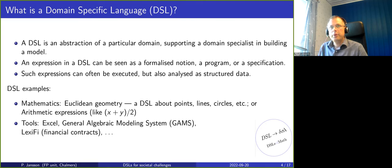DSL examples include from the mathematical side Euclidean geometry, a language about points, lines, circles, or arithmetic expressions like the average of x and y. There are also many tools: Excel for the language of spreadsheet calculations, GAMS for optimization in the economic sciences, and an example here, LexiFi, which is a domain-specific language for financial contracts which was published about in 2000 and then spun off as a company and later bought by Bloomberg.